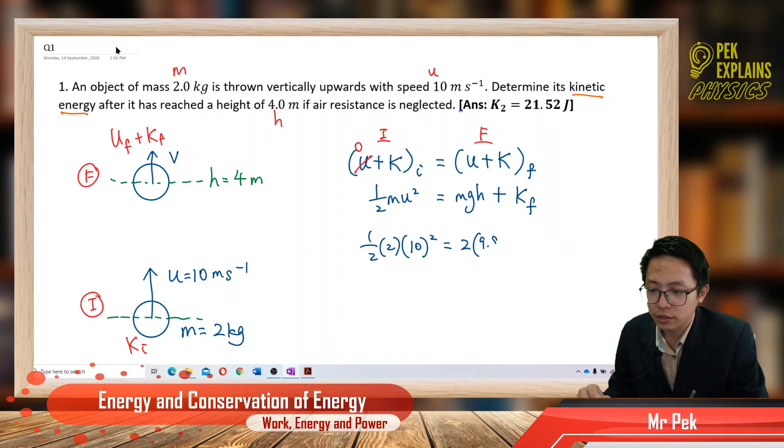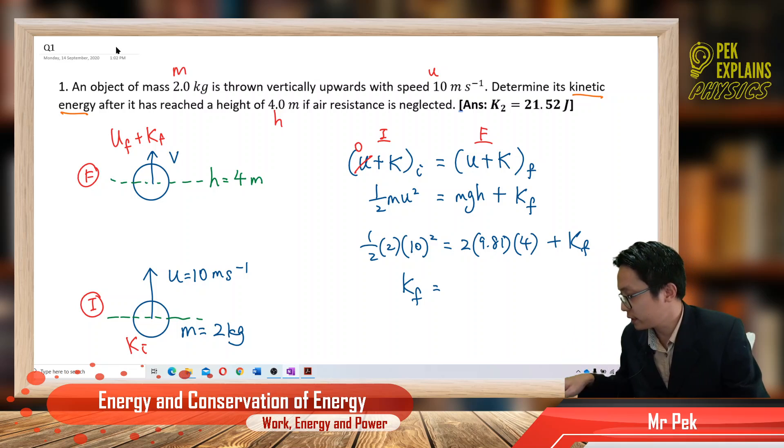And mgh, mass 2, g is 9.81, the height is 4 meter. So, now find the final kinetic energy. Our final kinetic energy we get is 21.52 joule.